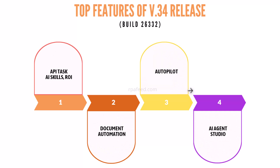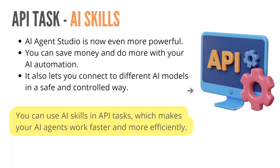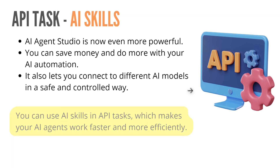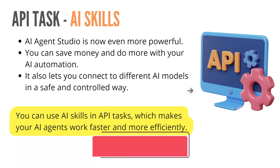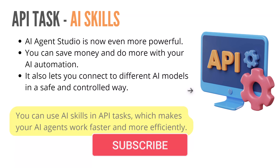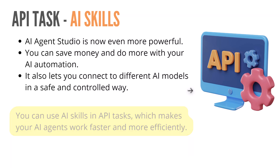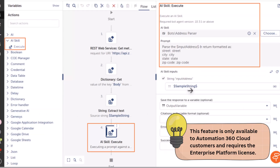Let's dive into API task. You can now use AI skills in API task. AI skills is one of the important components of AI agent studio. If you use AI skills in your API task, it will make your agents work faster and more efficiently. You can save money, do more with your automations, and connect to different AI models in a controlled way.